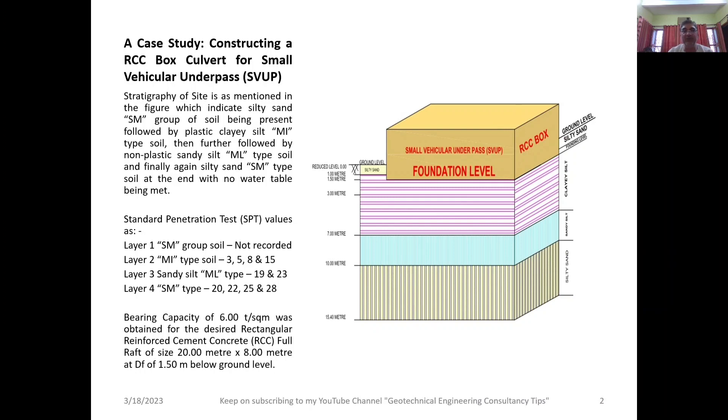The Standard Penetration Test (SPT) values are depicted on the left side of the image. Layer 1, the silty sand SM type, had no SPT values recorded. Layer 2, the plastic clayey silt MI type soil which produces a lot of settlement, had SPT values of 3, 5, 8, and 15. Layer 3, sandy silt ML type soil, had SPT values of 19 and 23, while the last layer, SM type soil, had SPT values of 20, 22, 25, and 28.